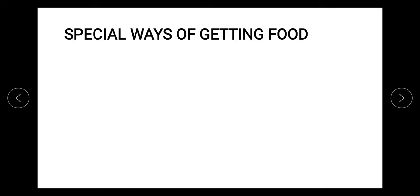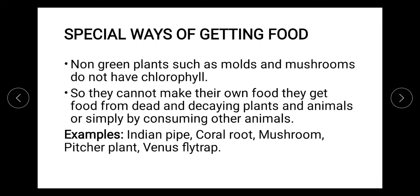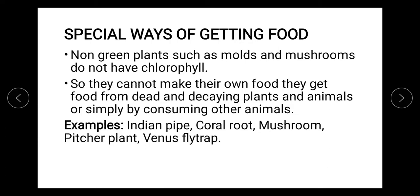Today we will be looking into that concept — how exactly do different colored plants obtain their food from nature. That is why this video is called 'Special Ways of Getting Food.' We will look into the category of non-green plants which do not have chlorophyll. For example, molds and mushrooms, which are basically a type of fungus.